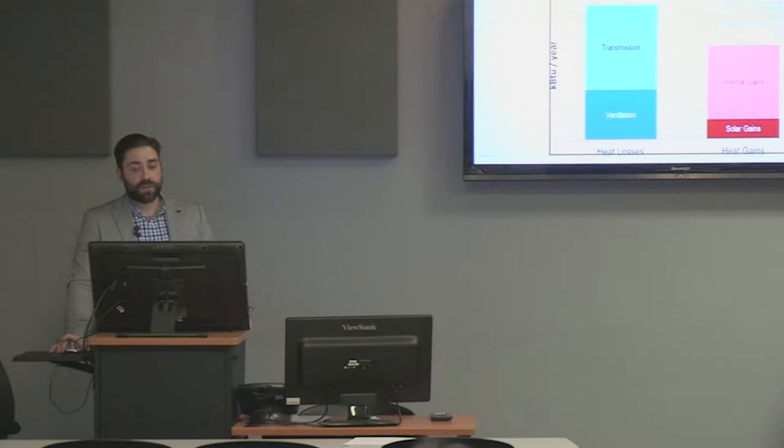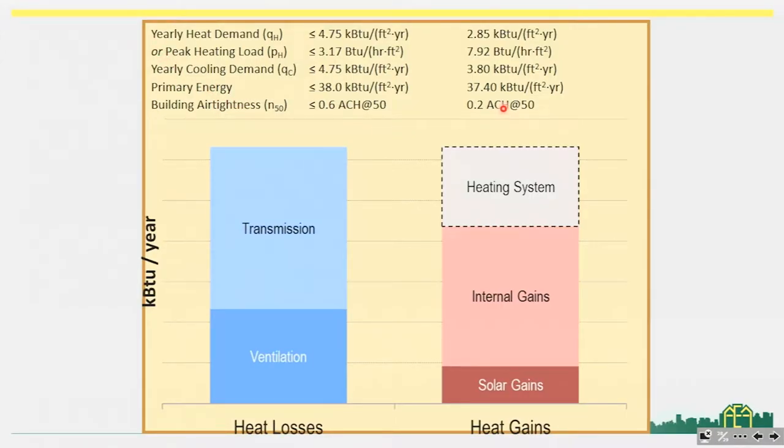But these things actually work against us in the summertime. That 2.85 kBTU per square foot per year for our yearly heating demand becomes 3.80 kBTU per square foot per year for our cooling demand, because now we have to cool off all of those internal gains and do proper shading to reduce solar gains as much as possible. So we have to make sure that we have a cooling system sized large enough to handle those internal and solar gains.